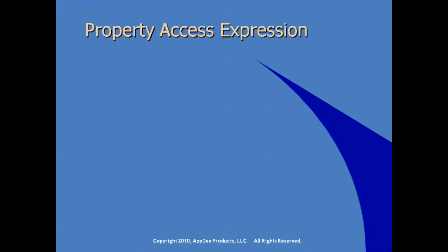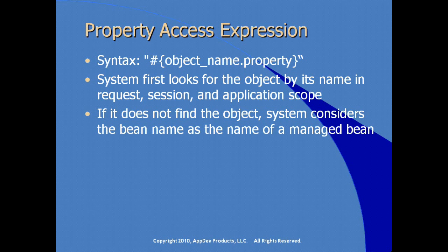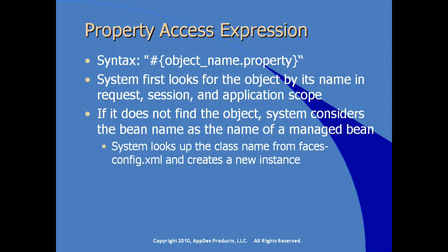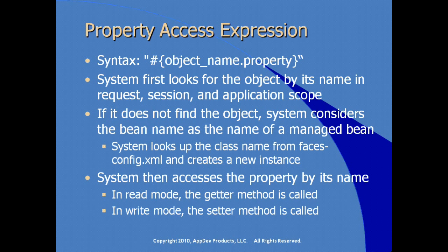As we've seen in the expression language, accessing properties is generally done with dot notation: object name dot property name. First, the object has to be found in one of the available scopes — request, session, then application. If it doesn't find the object, the system considers the bean name as the name of a managed bean, looks up the class name from faces-config, and if found, creates a new instance. Then the system accesses the property by name. In read mode, the getter is called; in write mode, the setter is called. That's why we see getters and setters in managed bean instances following traditional Java bean practices.